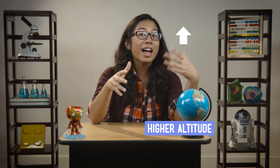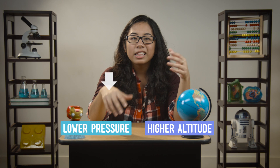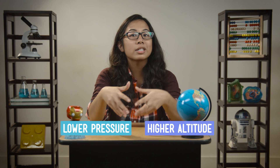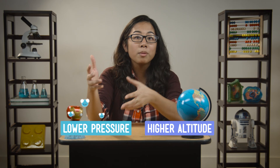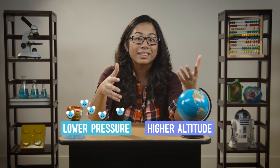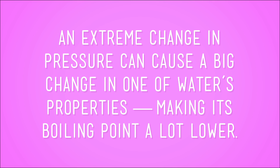That's because higher altitude means lower pressure. Less pressure exerts less force on the water molecules that keeps them bound together as a liquid. So, without all that pressure packing it together into a liquid, water boils much more quickly at higher elevations. An extreme change in pressure can cause a big change in one of water's properties, making its boiling point a lot lower.